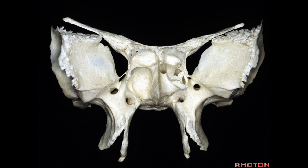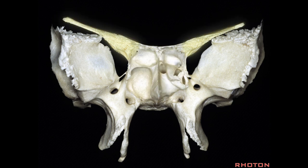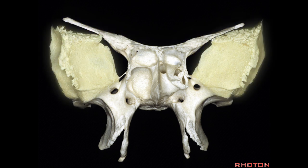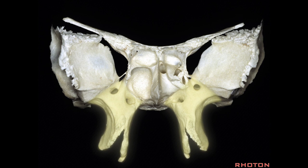The sphenoid bone has a body that contains the sphenoid sinus and sella, a lesser wing, a greater wing, and a pterygoid process.